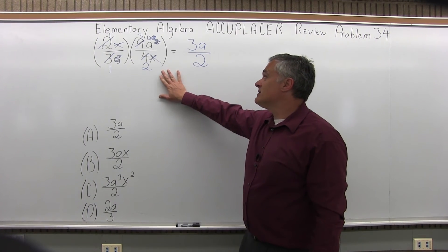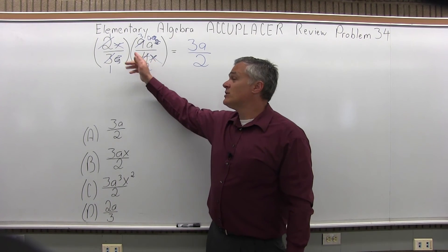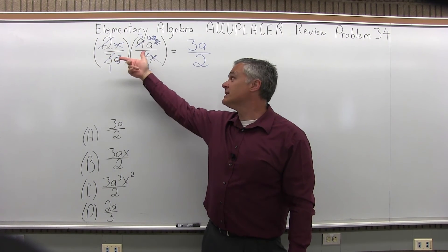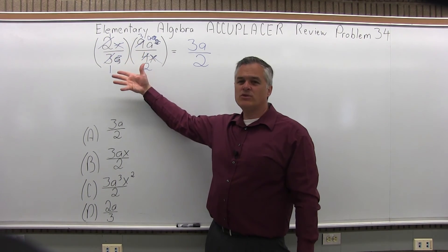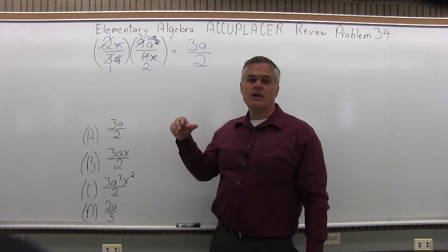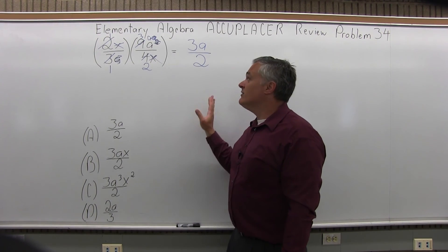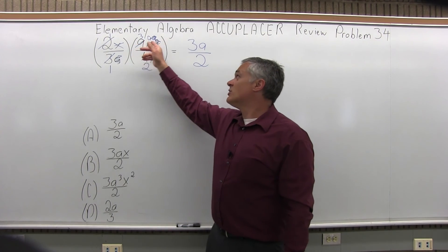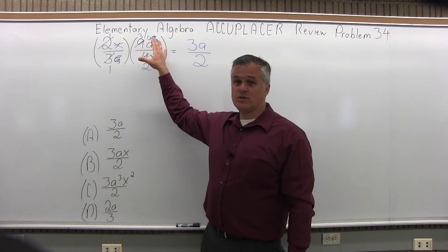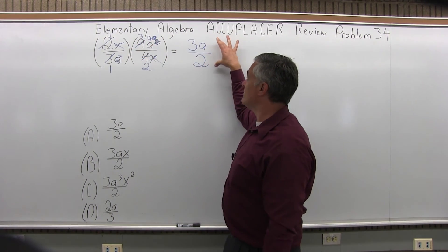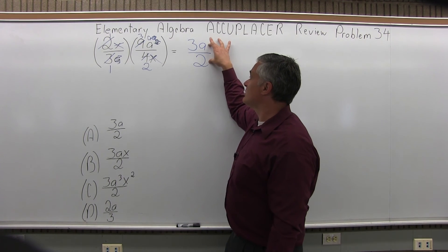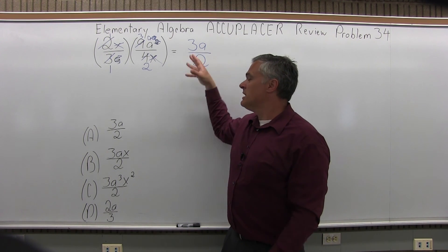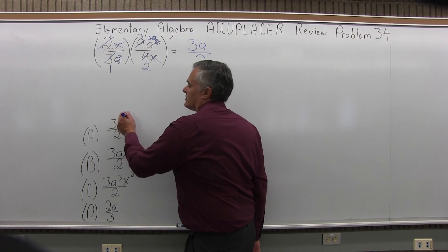You could have canceled in other orders — I happened to notice the x's first, but you could have canceled the numbers first or the a's first. Whatever you see first, just start canceling. Cancel as much as you can. If you prefer, you could have multiplied numerator times numerator and denominator times denominator, getting a bigger expression that still reduces down to the same result of 3a over 2. However you do it, you get 3a over 2, which is option A for this problem.